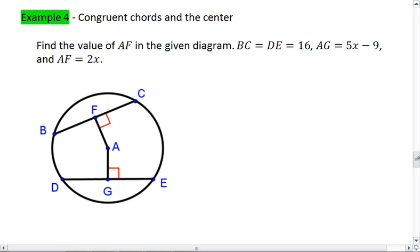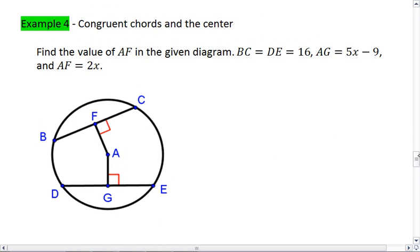And here's our example. In the picture below, find the value of AF in the given diagram. We're told that BC equals DE, which equals 16. Right now that tells us we do have congruent chords, which means also their distances are the same. We're also told that AG is 5X minus 9, and AF is 2X.